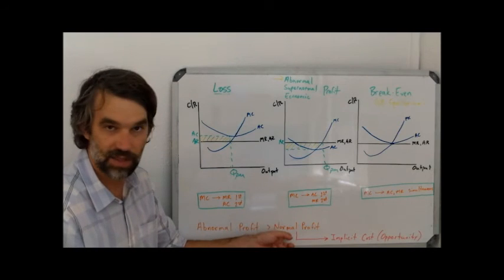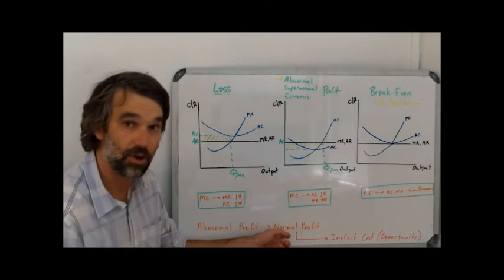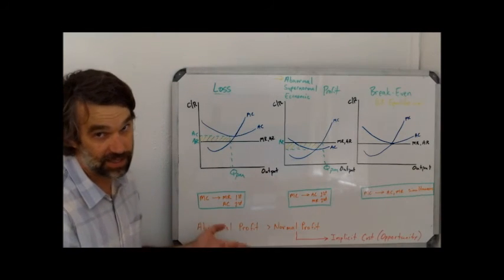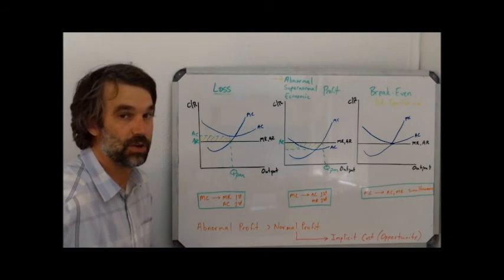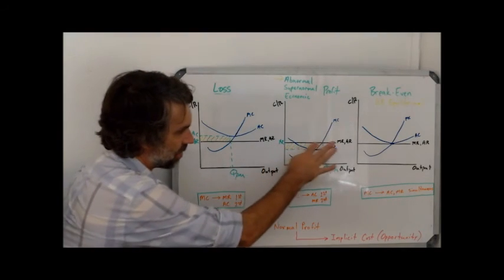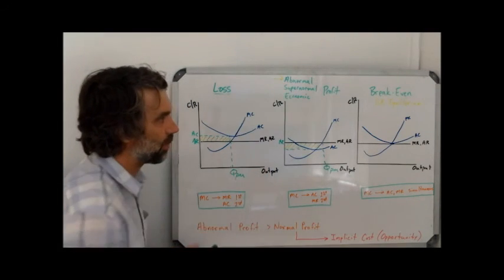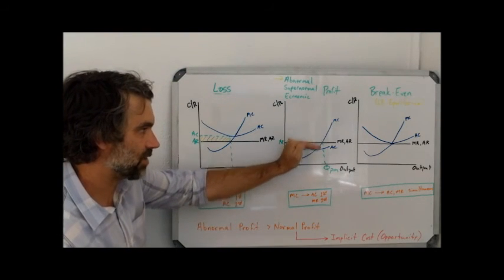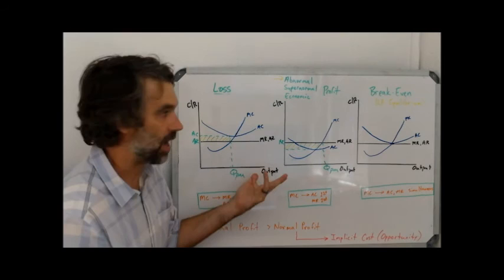So this is the amount of profit that an entrepreneur needs to stay in business. If they get less than this, they won't want to be an entrepreneur anymore. If they get more than this, that's what we call abnormal profit. It's not bad for the single entrepreneur, but we'll see that it does have some other effects. So this area here in yellow is our abnormal profit because it goes beyond the cost. It's revenue that pays for more than just the costs.